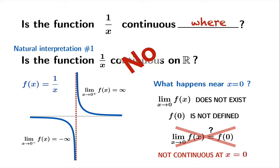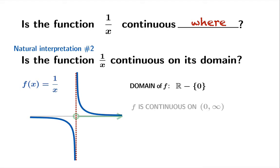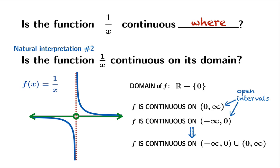But there's another interpretation. Maybe what the question is really asking is: is the function 1 over x continuous on its domain? In this case, the domain of the function is all reals except 0. The function is continuous on the open interval from 0 to infinity, and it's continuous on the open interval from negative infinity to 0. Since these two intervals are open, f must be continuous on the union of these two open intervals. So yes, the function is in fact continuous on its domain. If you interpret the question one way the answer is yes, but if you interpret the question the other way the answer is no.